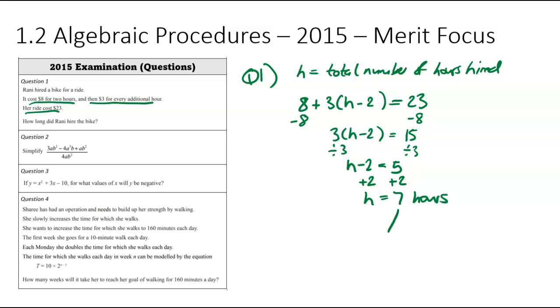So what this means is she hired the bike for the two hours costing the $8 and then another five hours each costing $3 per hour.